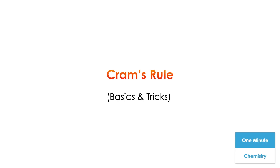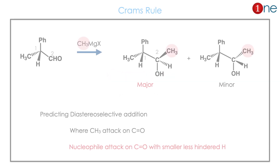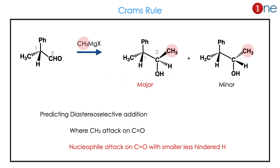Welcome to One Chemistry — this is the One Minute Chemistry series. We are going to quickly see what is Cram's rule. Cram's rule is the stereoselective reaction of nucleophilic attack on the carbonyl group, the carbonyl near to the chiral carbon. That's why the reaction is interesting — you have to predict which product is major.